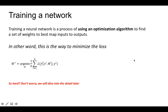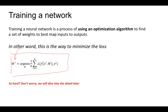To recap: training a neural network is a process of using an optimization algorithm to find a set of weights that best maps the input to the correct output. In other words, it is the process of minimizing the loss function. Mathematically, training the network means finding the set of parameters — sometimes called hyperparameters — that minimize the loss function, which depends on the predicted output and the target output over all data samples in the dataset. It may seem hard, but don't worry — it is actually quite straightforward, and we will go through it step by step.